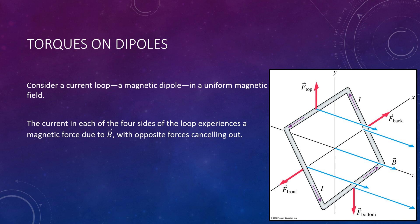We're going to consider a loop of current — a magnetic dipole — that is in a uniform magnetic field shown on the right. Here you have the magnetic field moving kind of toward the z-axis along to the right, and we have our current loop with current moving in a counterclockwise direction. You can apply the right-hand rule to all four sides of this to figure out which direction the force would be going.